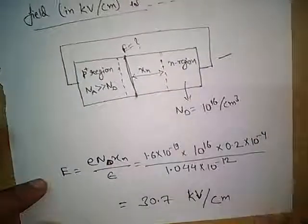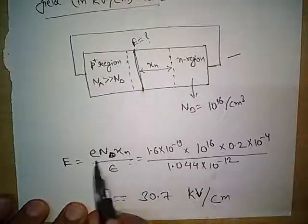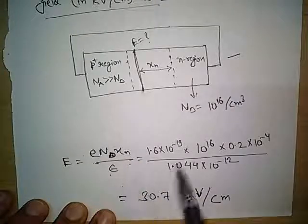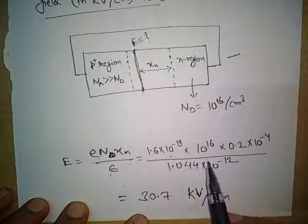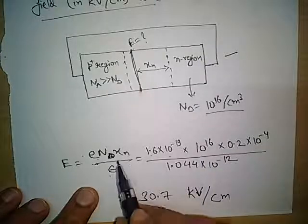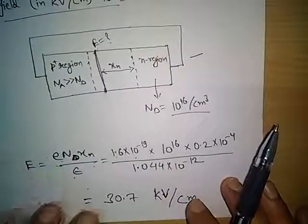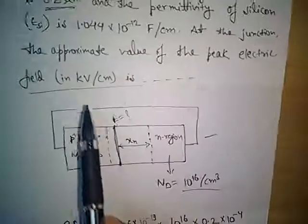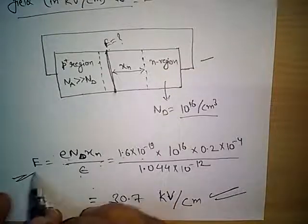Now we come back to the question and solve it using this formula: E equals e·nd·xn divided by epsilon. Here e is the electronic charge, 1.6 into 10 to the power minus 19. nd is the donor atom density, 10 to the power 16 per centimeter cube as given. xn is the depletion width in the n-region, given as 0.2 micrometer — converting to centimeters: 0.2 into 10 to the power minus 4 centimeter. Dividing by epsilon, the permittivity value given in the question, and solving, we get the value of the electric field at the p-n junction.